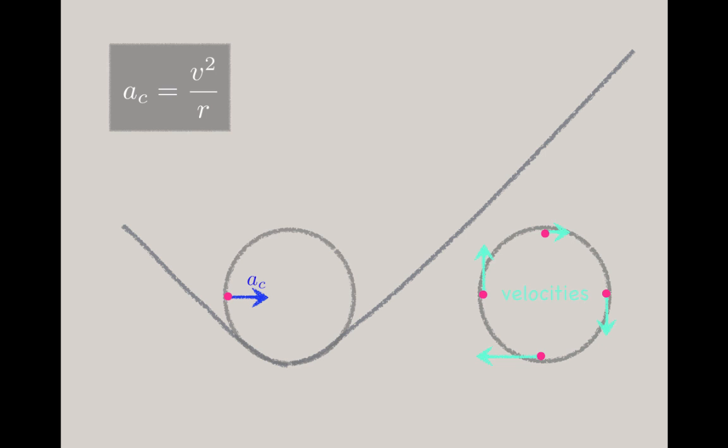But the particle is also undergoing a speed change. It's slowing down as it climbs up the track. So there's a second acceleration along the path of motion, or tangent to the motion. When a direction change is also involved, the speed changing acceleration is typically referred to as tangential acceleration.